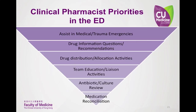With the many responsibilities of an emergency medicine pharmacist, it is important to prioritize activities. Assisting in medical or trauma emergencies should come first, followed by providing recommendations for drug use including therapeutic selection and safe but effective dosing. Of lower priority are items such as drug distribution, allocation, education, antibiotic or culture review, and medication review.